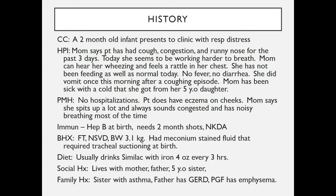The patient drinks Similac with iron, four ounces every three hours. She lives with her mother, father, and a five-year-old sister. Family history includes the sister who has asthma, the father who has GERD, and a paternal grandfather who has emphysema.